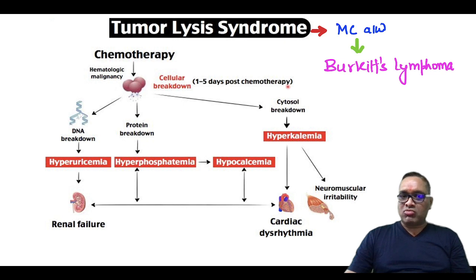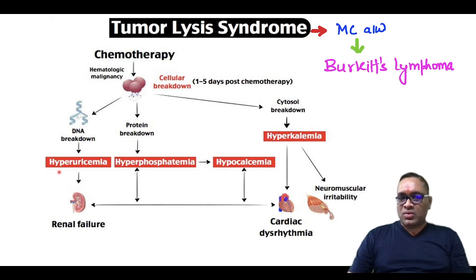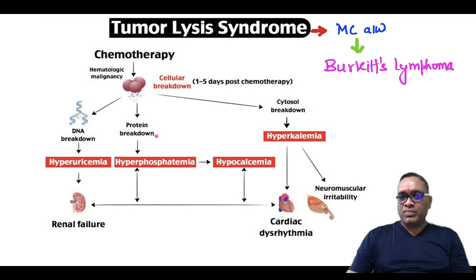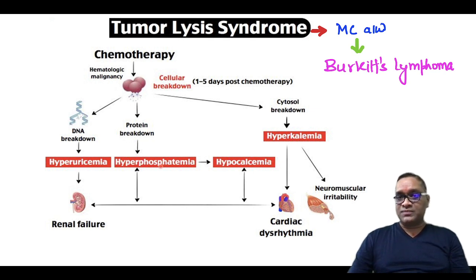After one to five days of chemotherapy, a sequence of events occurs. First, DNA breakdown leads to hyperuricemia. Then, protein breakdown causes two things: hyperphosphatemia and hypocalcemia.